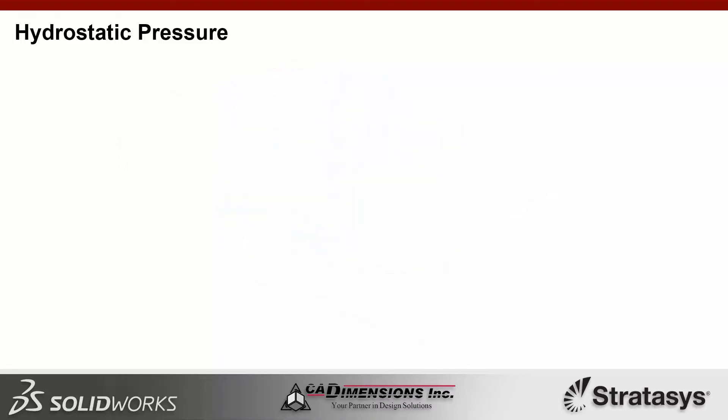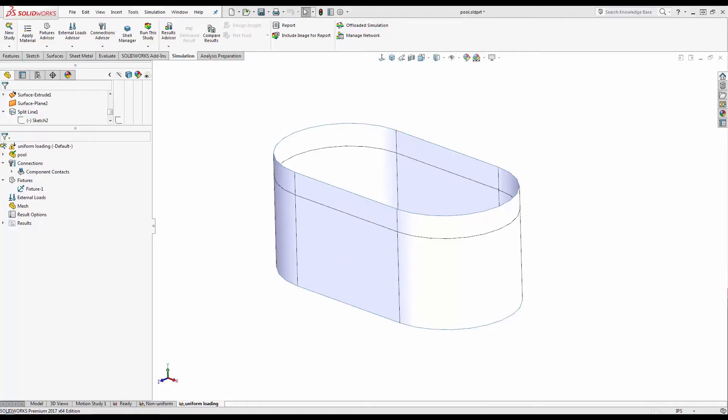Using the hydrostatic pressure equation, pressure equals density times the gravitational force times depth, we get a pressure of about 1.73 psi at the bottom of our pool. Let's jump into SOLIDWORKS simulation and let's see what happens when we fill up our pool.